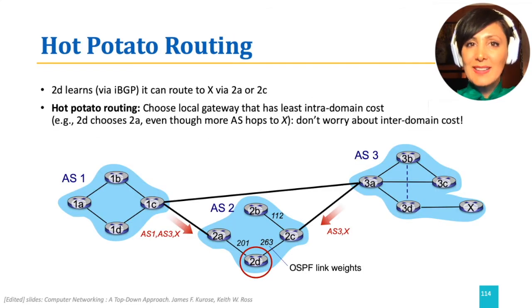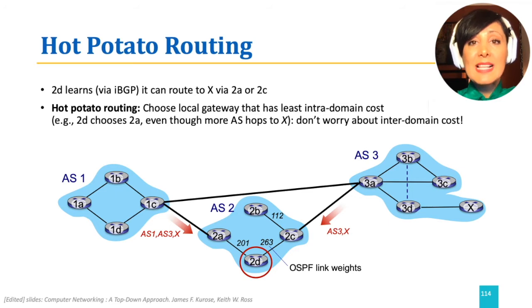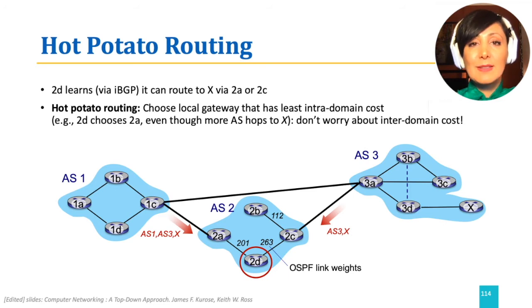In hot potato routing, the router chooses the closest next hop router that reaches that destination. For example, in this figure, router 2d learns via IBGP that it can route to external destination x using either 2a or 2c. If it chooses the local gateway with the least intra-domain cost, it will pick 2a, because the cost of the link to 2a is 201, which is less than 263 to 2c. Note that this results in a longer AS path.